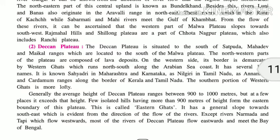Generally, the average height of the Deccan Plateau ranges between 900 to 1,000 meters. However, at a few places it exceeds that height. Some isolated hills on the eastern boundary of this plateau have more than 900 meters of height.